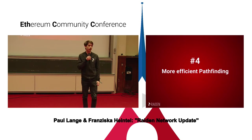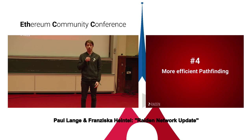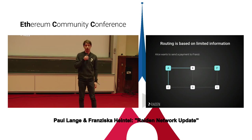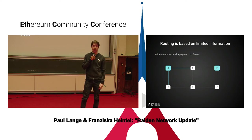As Franzi already said, having one bidirectional payment channel is quite nice — it helps scaling, you can do off-chain payments a lot faster. And the second step is having a network of payment channels, which scales on a whole different dimension. But that doesn't come for free — new problems pop up, like how do you route a payment through the network? This is a problem we've started looking at and improving. We want to make pathfinding more efficient.